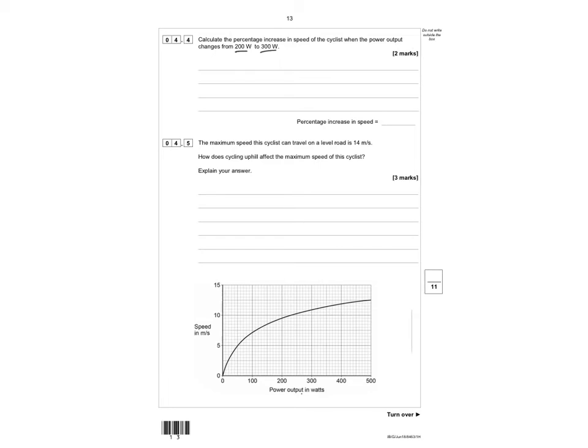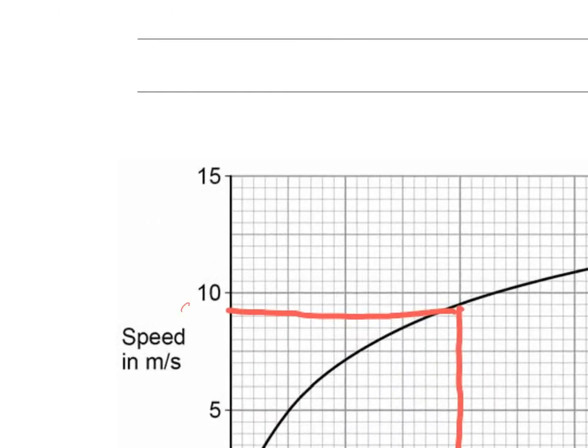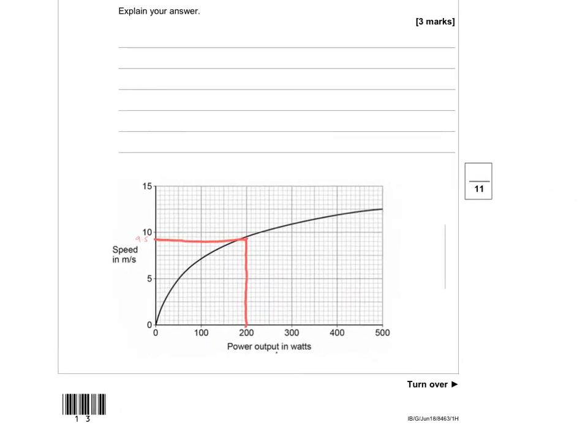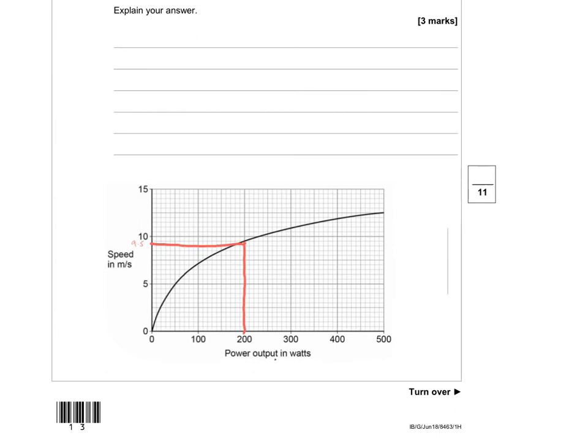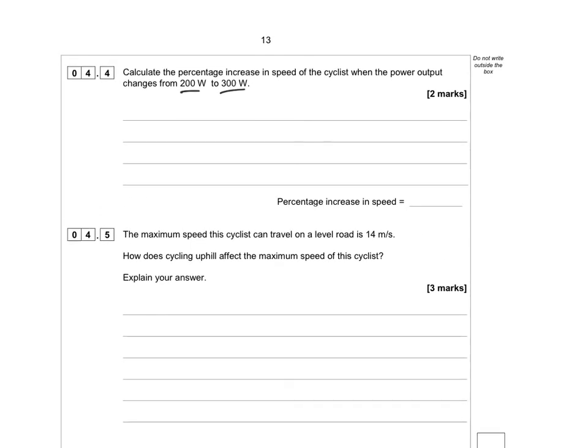So at 200 watts, it's a case of finding 200 watts. So using a ruler, you find 200 watts and then you need to go across to find what the speed is. And if we zoom in on that, you'll see it's 9.5. And then you need to find 300 watts and you go up and then across. And if you zoom in, the speed is 11. So what you've got are two speeds and you need to find the difference. So 11 minus 9.5 is then 1.5.